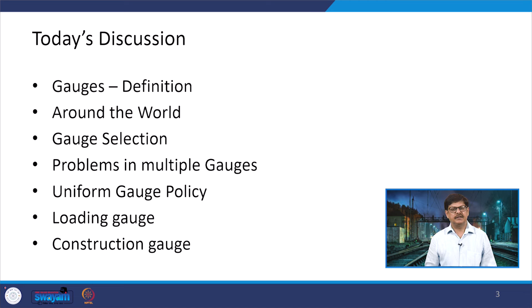Dear students and participants of this course on Railway Engineering. We are now moving forward and today our discussion is going to be centered around gauges. In the previous lecture, we discussed about the permanent way, the requirements of the permanent way, the classification of the track on the basis of speeds.